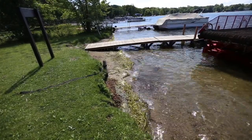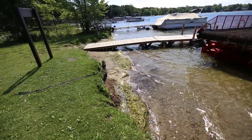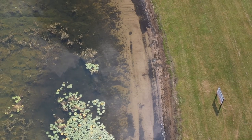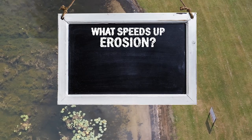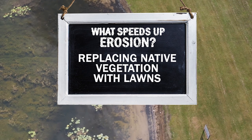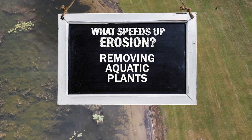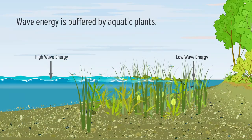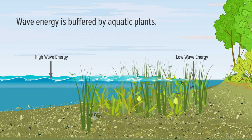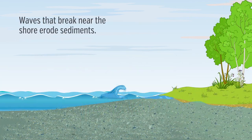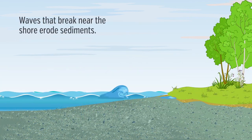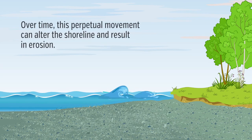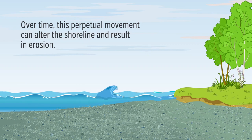Every lake has a natural amount of shoreline erosion due to waves, ice, and natural lake level changes. This happens over a long period of time and changes tend to be subtle. Development, replacing native vegetation with lawns, removing aquatic plants, and raising lake levels all play a role in disturbing the lake balance. For example, removing aquatic plants also removes one of the lake's natural defenses against erosion. Aquatic plants absorb and reduce wave energy before it can hit the shoreline. Once they are gone, the waves can directly hit the shoreline with all of their energy. As a result of many changes, shorelines can develop what is called accelerated erosion.